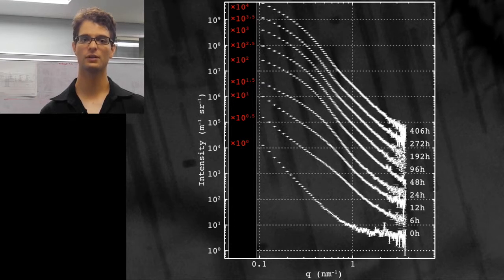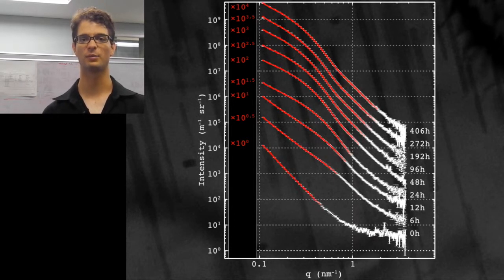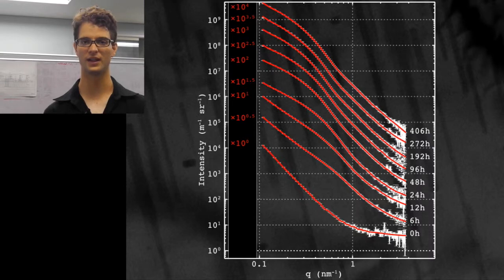Armed with this information, we can now fit the small angle scattering patterns all to within the uncertainty of the data.